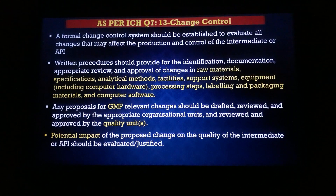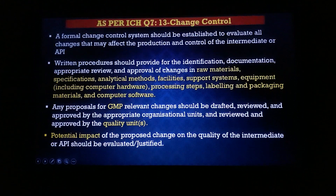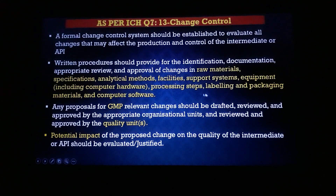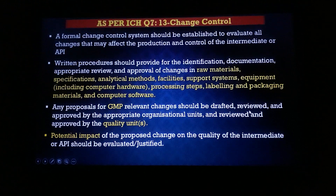As per ICH Q7 GMP guideline, Section 13 talks about this change control procedure. A formal change control system should be established to evaluate all changes that may affect the production and control of the intermediate or API. Written procedures should provide for the identification, documentation, appropriate review, and approval of changes in raw materials, specifications, analytical methods, facilities, supporting systems, equipment (including computer hardware), processing steps, labeling, packaging materials, and computer software.